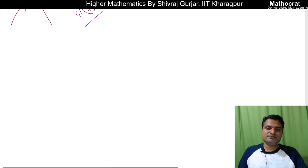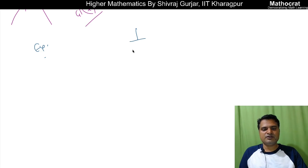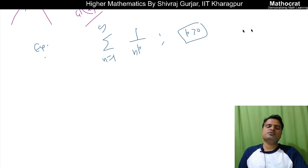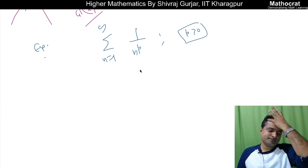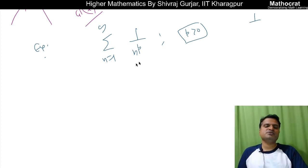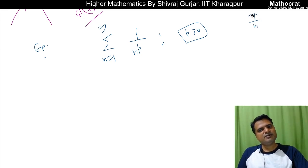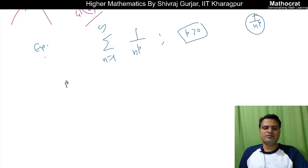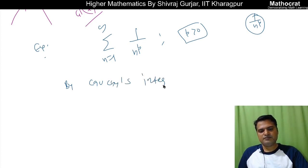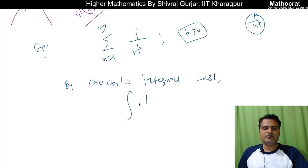Simple example using the p-test: summation 1/n^p, n from 1 to infinity. The function 1/x^p is integrable and monotonically decreasing. By Cauchy's Integral Test, we evaluate the integral from 1 to infinity of 1/x^p dx.